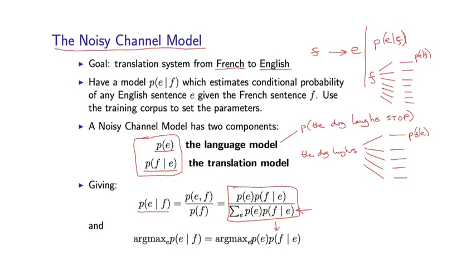So this constant term isn't needed when we're considering the argmax. We saw exactly the same trick when we saw noisy channel models for hidden Markov models earlier in this class. So we end up with the following problem. Remember, our problem is to take some French sentence F and to produce some translation E.